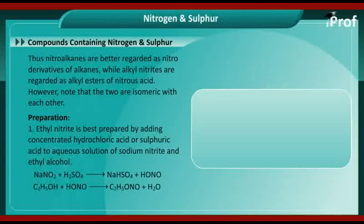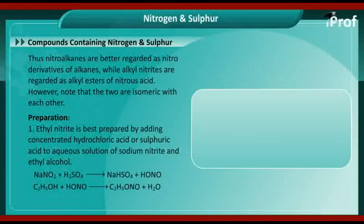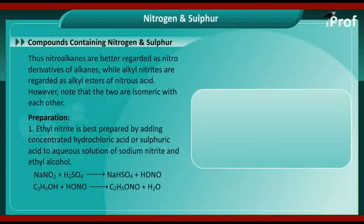Methods of preparation. Ethyl nitrite is best prepared by adding concentrated hydrochloric acid or sulfuric acid to an aqueous solution of sodium nitrite and ethyl alcohol. The reaction is: NaNO2 + H2SO4 gives NaHSO4 + HNO2. This HNO2, when it reacts with ethyl alcohol, gives the nitrite compound: C2H5OH + HNO2 gives C2H5ONO + H2O.